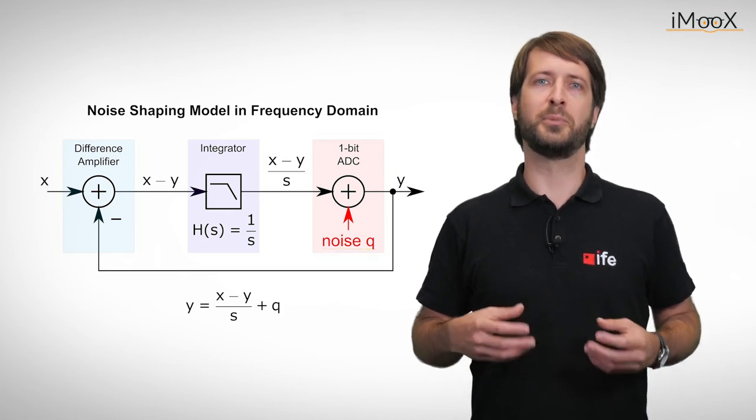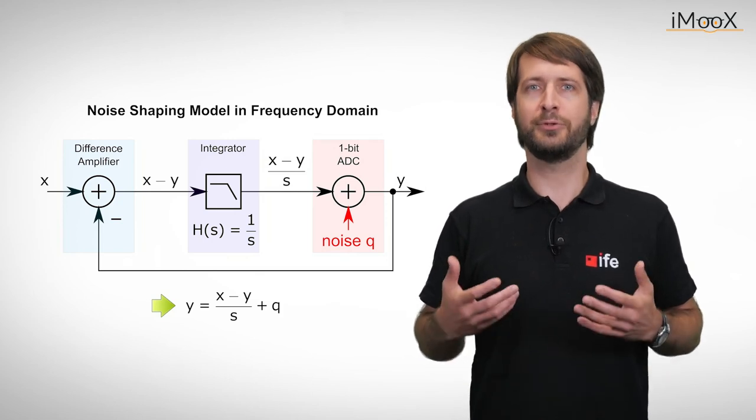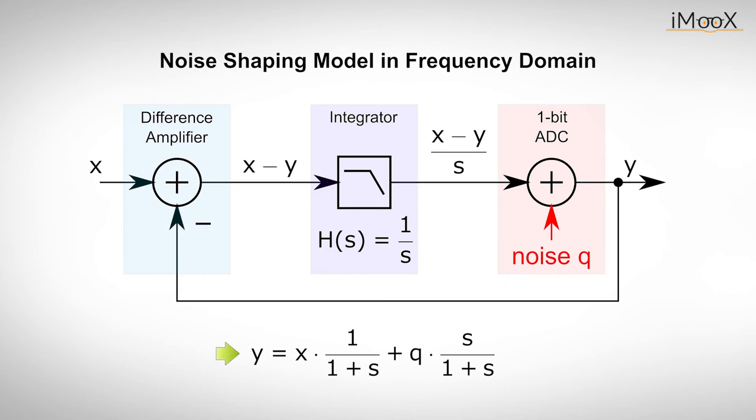In addition, we assume the 1-bit conversion process simply adds uniformly distributed quantization noise to the signal output. The output of the modulator can therefore be represented by the following equation. If we rewrite the formula, we can see that when the frequency approaches zero, the noise term goes towards zero and the output of the modulator goes towards the input value x. Conversely, when the frequency is increased, the noise term approaches q and the input signal term approaches zero.